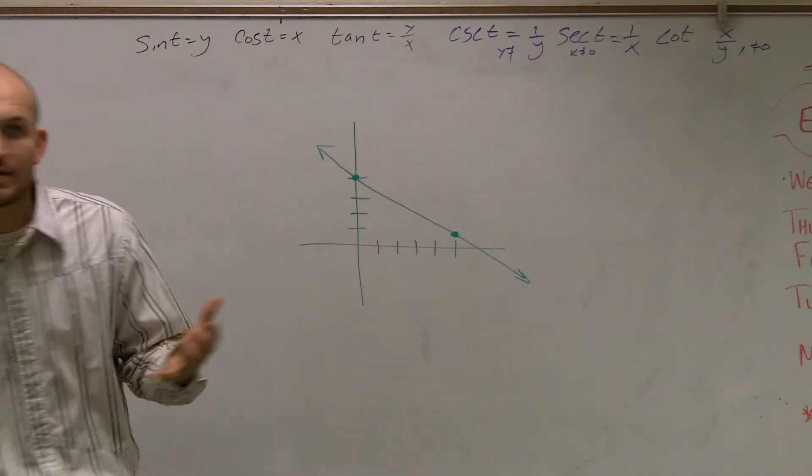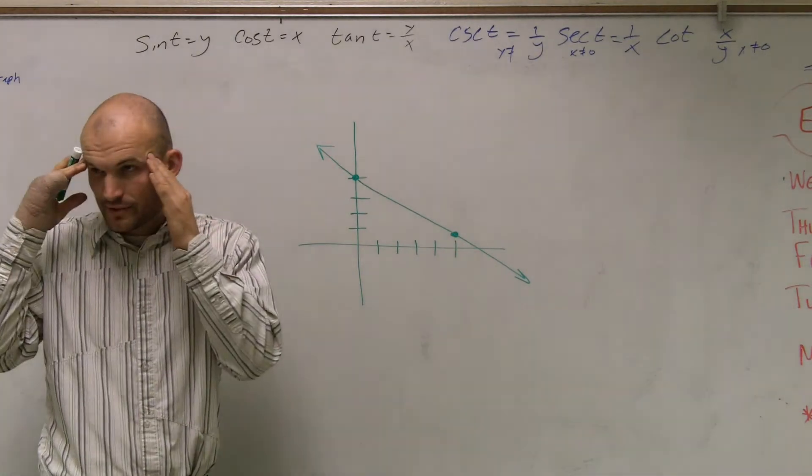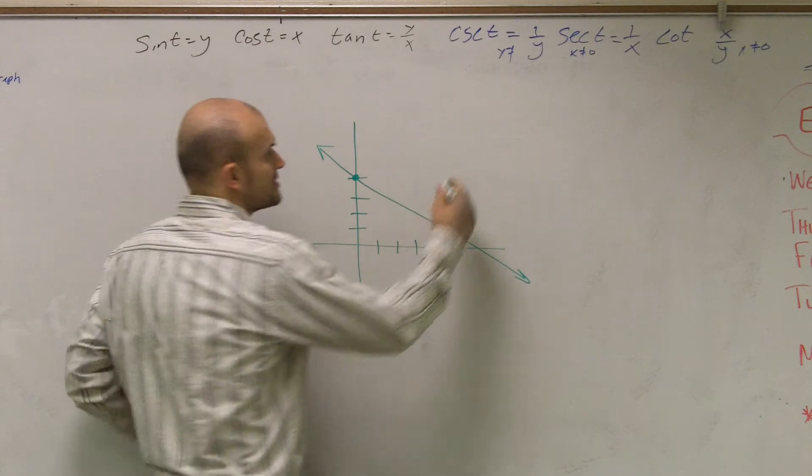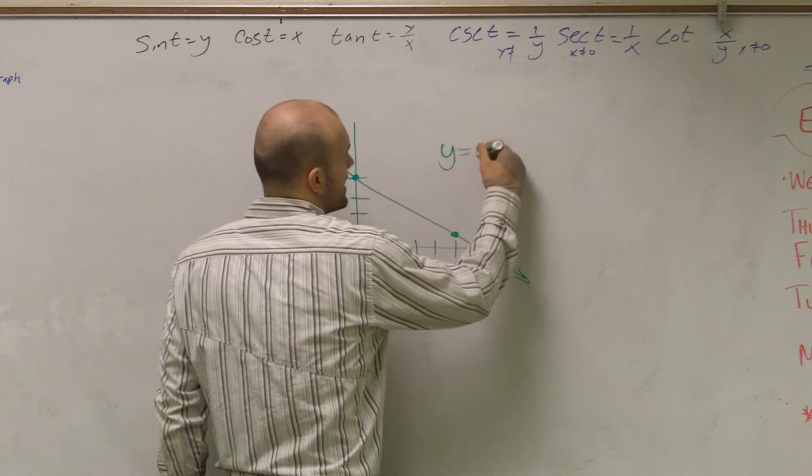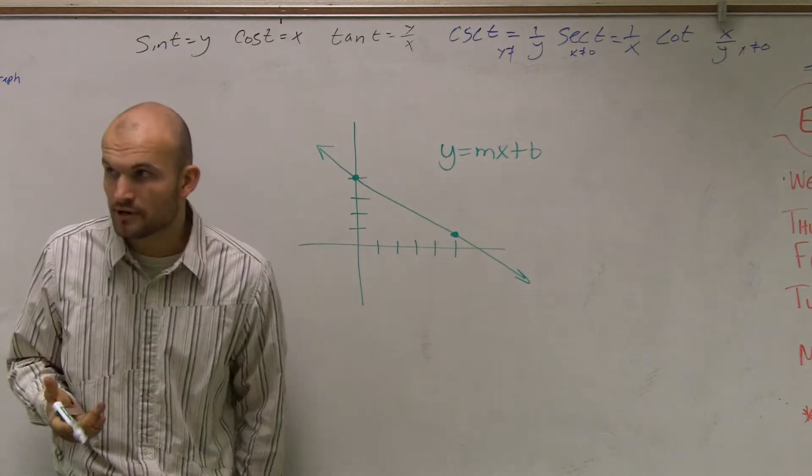All right. So for these types of problems, which you guys did last class period, I just want to kind of remind you what exactly we were doing. What we learned, remember, was our equation of the line, y equals mx plus b. That's what we call slope-intercept form.